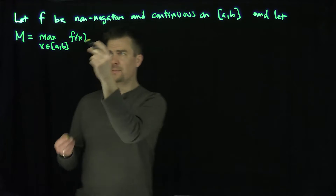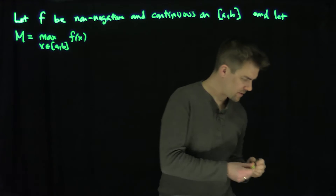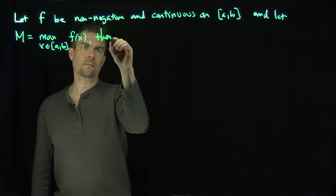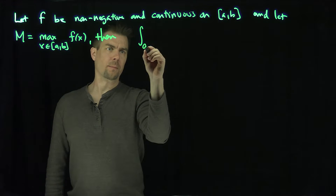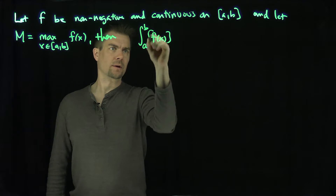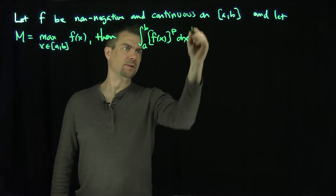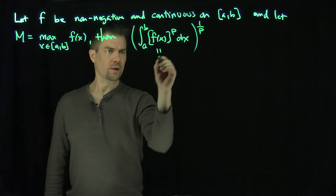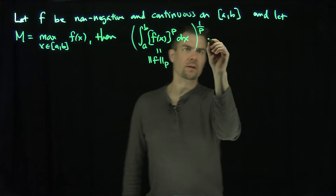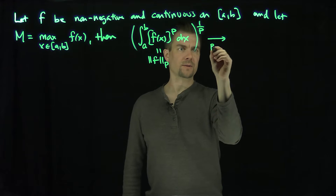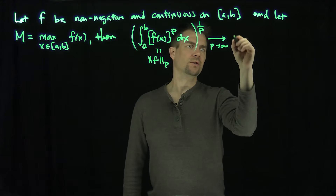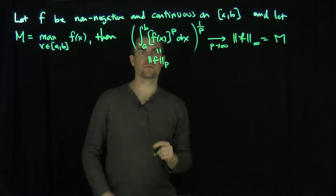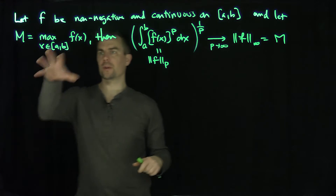This maximum exists because the interval is compact — that exists by compactness. Then the integral from a to b of f(x) to the p dx, to the one over p — so this is just the Lp norm of the function — converges as p goes to infinity to the L infinity norm, which is just the maximum of the function over the interval [a, b].